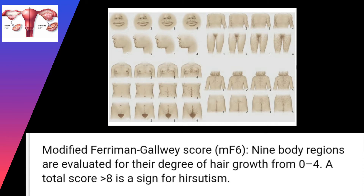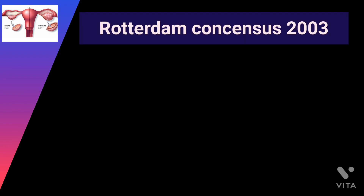There is a method for the evaluation of hirsutism: the Modified Ferriman Gallway score, or MFG score. It grades nine body areas from zero to four, including the upper lip, chin, chest, upper abdomen, lower abdomen, thighs, back, arm, and buttock. A total score of eight or more is considered abnormal for an adult white woman; a score of 36 is the most severe.